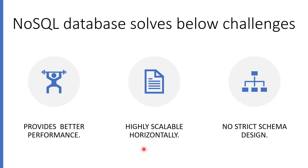These are the different challenges solved by NoSQL. It provides better performance because of indexing and replication. You don't have to refer to multiple tables — everything is within one collection, and you can have a variety of documents within one collection. NoSQL databases are highly scalable horizontally, meaning you keep adding nodes, which is better compared to traditional RDBMS which scales vertically.